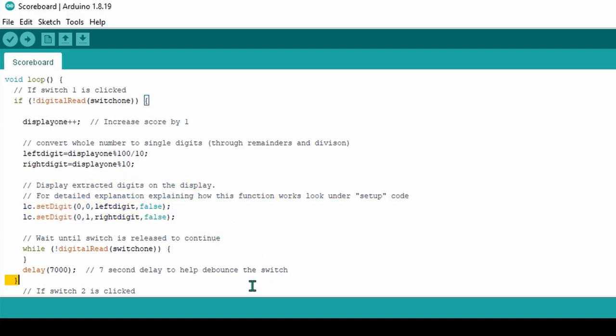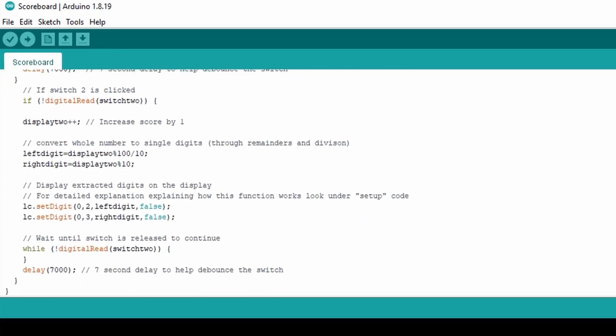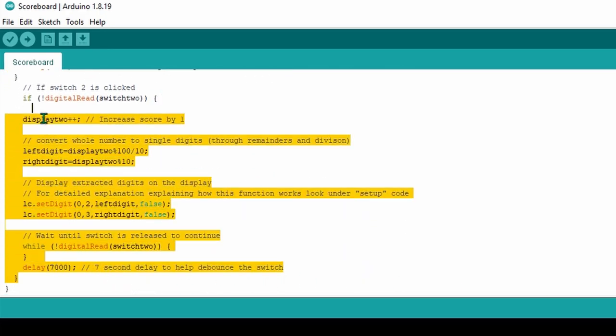Finally, we have the 7-second delay defined for the switches here. When the switch is first pressed, there is a 7-second delay before the switch can be activated again. This delay also helps debounce the switch. It was determined to be 7 seconds after playtesting. This part of the code does the exact same thing that the switch 1 code does, except it does it for switch 2, the other switch.